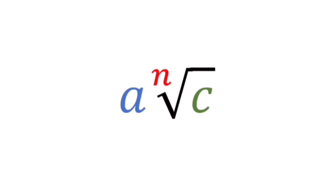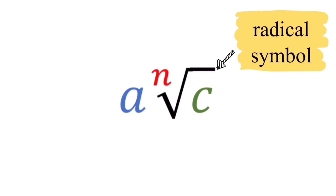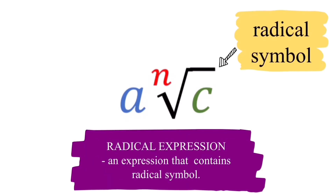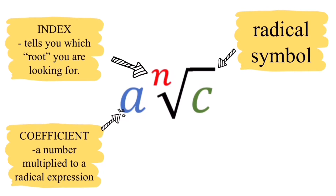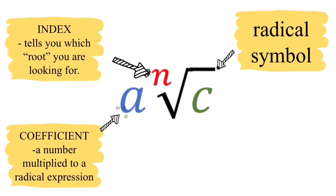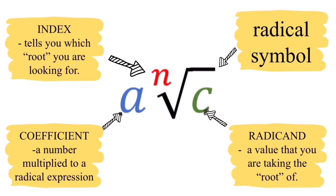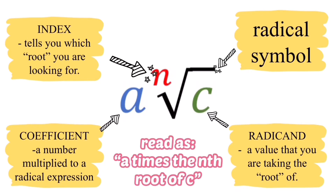These are the parts of every radical expression. The first part is the radical symbol — that's why it's called a radical expression, because it contains the radical symbol. The letter 'a' here is called the coefficient — a number multiplied to the radical expression. The letter 'n' is called the index, which tells you which root you're looking for. If the index is not written, that invisible number is two. The letter 'c' is the radicand — the value you are taking the root of.